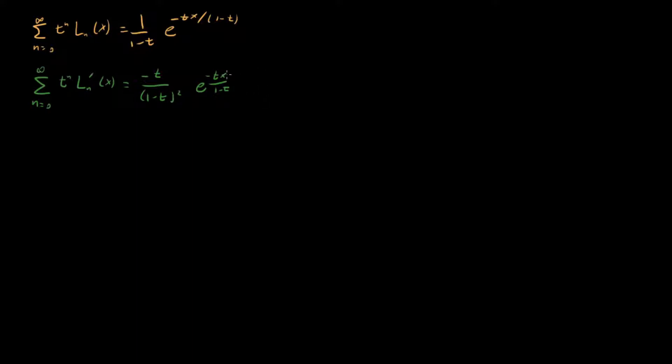But we can do the same type of thing that we did last time and notice that this function right here, or part of this, can be rewritten in terms of this series right here. In fact, we can write this whole guy right here as minus t over 1 minus t, sum n equals 0 to infinity t to the n L_n of x. So you can already see that we're relating a series in Laguerre polynomials to a series in the derivative of Laguerre polynomials.